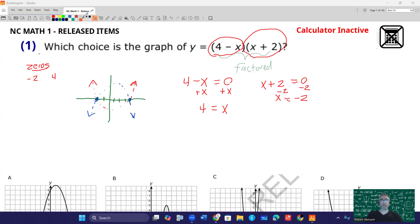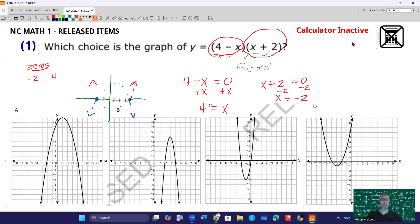So let's bring those graphs back. So you may notice that there's only one graph that actually crosses at the values of negative 2 and positive 4 and so that's going to be this one at answer choice A. All the other ones have different zeros and so A is going to be your answer.